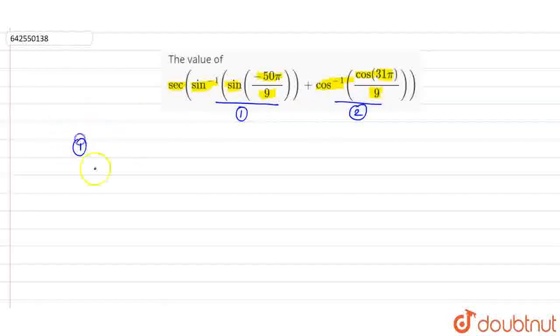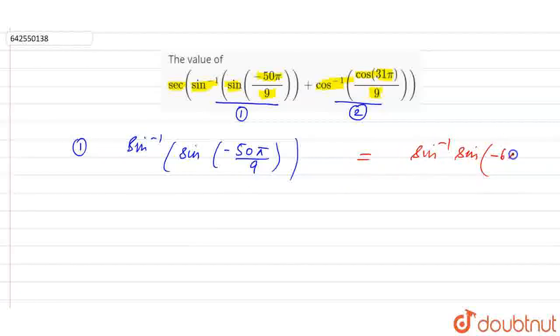Solving 1, we have sine inverse of sine of minus 50 pi by 9. We can write this term as sine inverse of sine of minus 6 pi plus 4 pi by 9. That is minus 50 pi by 9 written here.